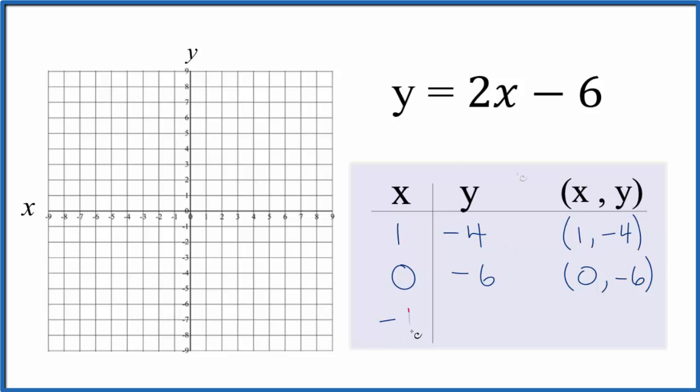And then how about negative 1? 2 times negative 1, that's negative 2, plus negative 6. That gives us negative 8.